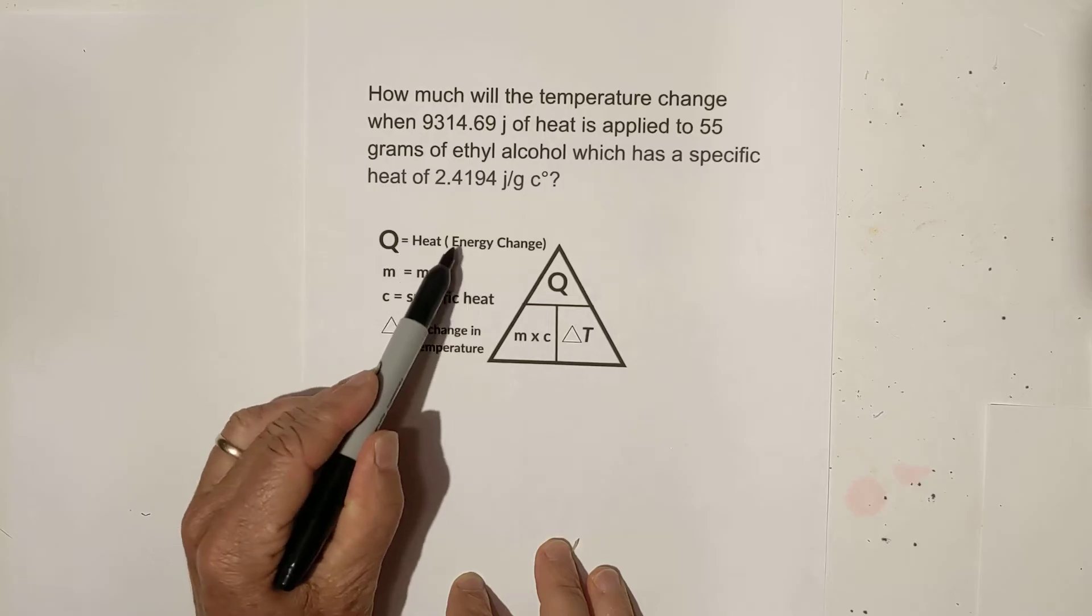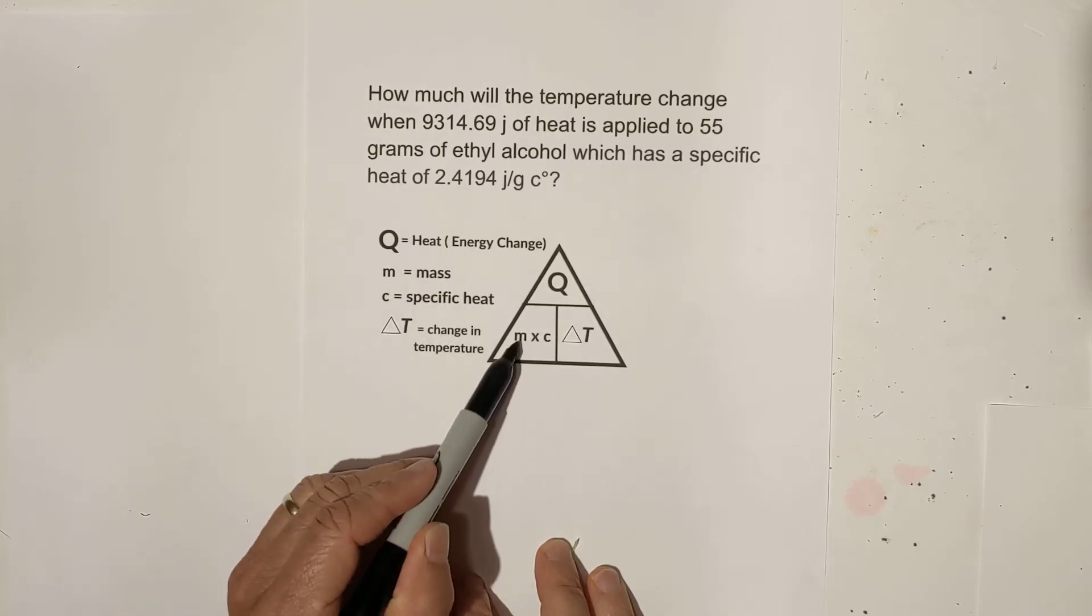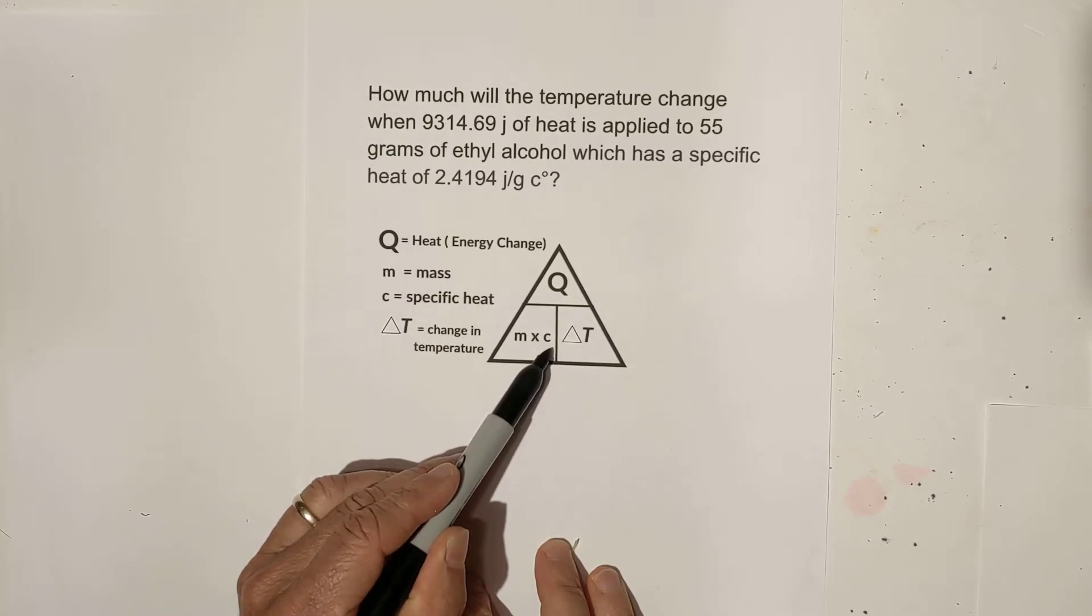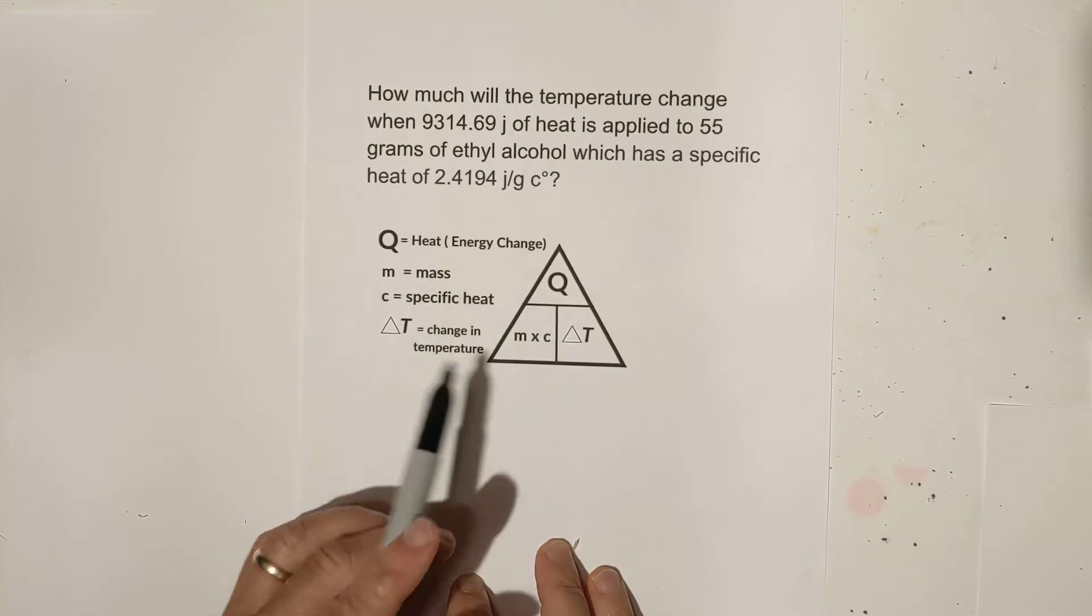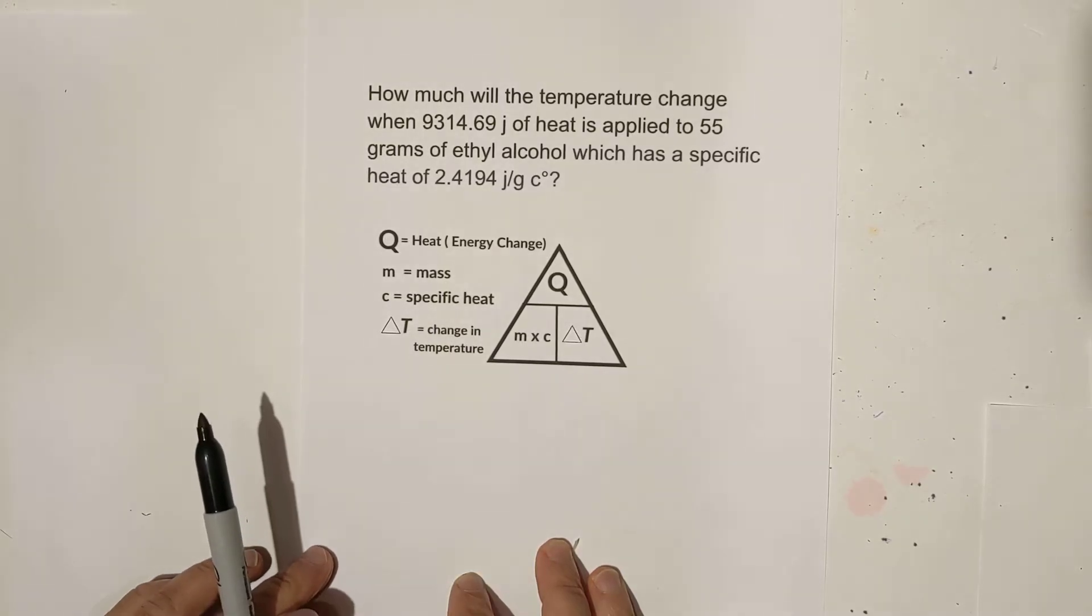Q obviously stands for the heat or the energy change. The m is mass. The c is specific heat and this is the change in temperature. Let's work the first example and you'll see how the triangle works.